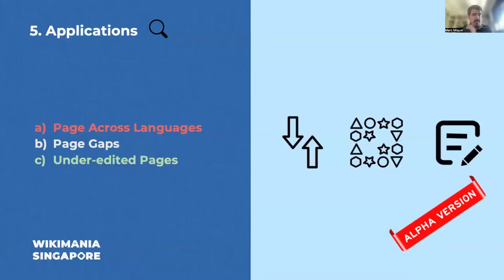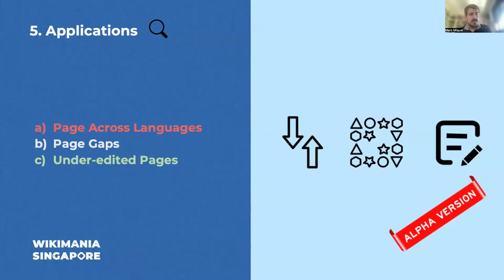The third objective is to create tools. We initially created three tools, which I must say are very experimental — very alpha version. You can try them. The first one is Page Across Languages, which aims at comparing the same admin page across different languages and seeing which ones are more developed, which contain more links, which are more viewed, etc.